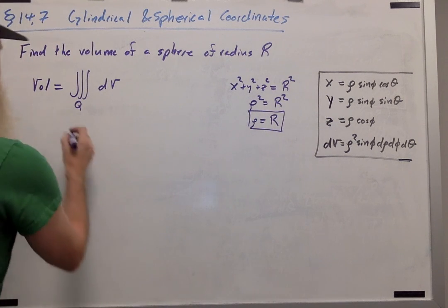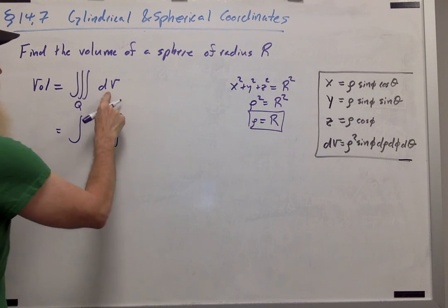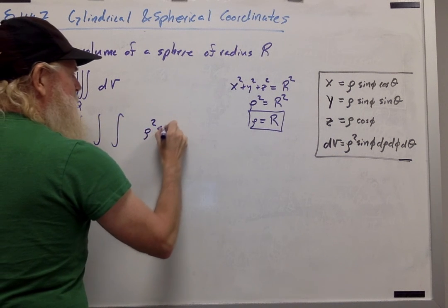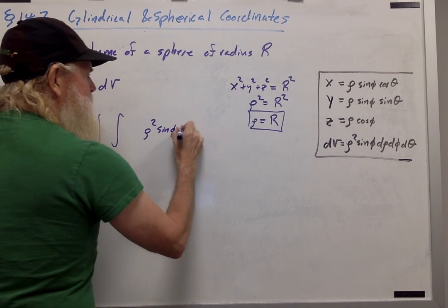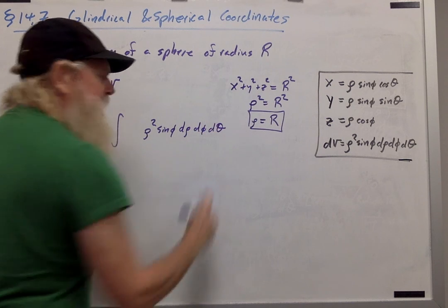Now let's use that to set up the bounds. Remember, in spherical coordinates, dV is equal to rho squared sine phi d rho d phi d theta.